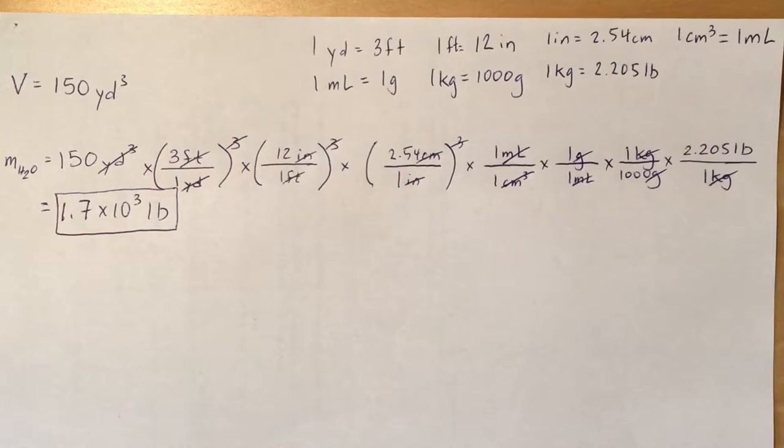One yard equals three feet, one foot equals twelve inches, one inch equals 2.54 centimeters, one centimeter cubed equals one mL, one mL equals one gram, one kilogram equals a thousand grams, and one kilogram equals 2.205 pounds.